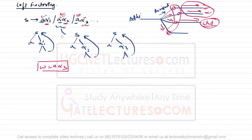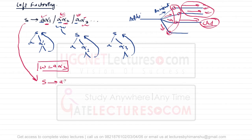Left factoring wastes a lot of time, so for any given grammar we must eliminate it. To eliminate left factoring from S → aα1 | aα2 | aα3, we rewrite it as: S → aS′ and S′ → α1 | α2 | α3. This is the formula used to eliminate left factoring.